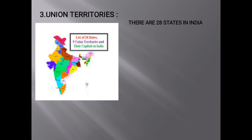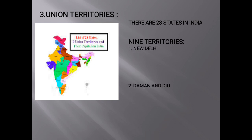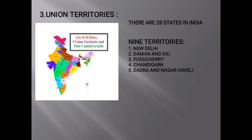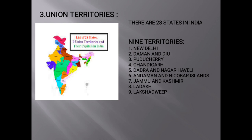In India, there is a Union Government, 28 State Governments, and 9 Union Territories. The Union Government controls the Union Territories. The 9 Union Territories are: New Delhi, Daman and Diu, Puducherry, Chandigarh, Dadra and Nagar Haveli, Andaman and Nicobar Islands, Jammu and Kashmir, Ladakh, and Lakshadweep.